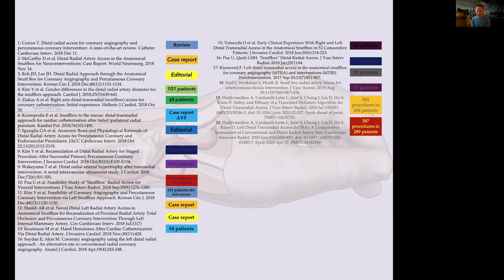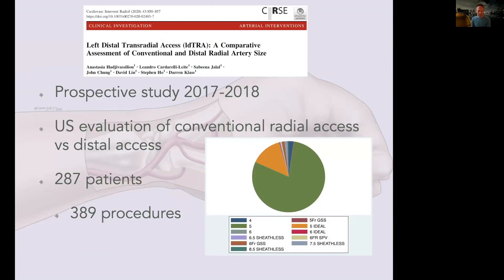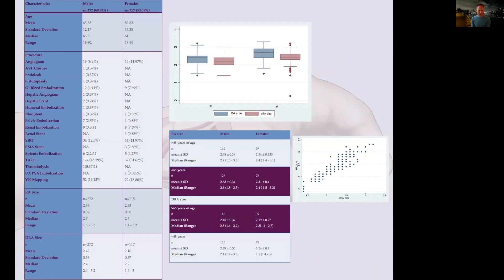This is our paper published in CVIR. It's a prospective study looking at radial artery size—389 procedures but 287 patients. You can see here, although there's statistically significant differences in conventional versus distal radial artery size, it was mainly due to the sheer number of patients. But if you look at the actual numbers, there's about a 0.2 millimeter difference in size between the conventional and the distal radial artery.